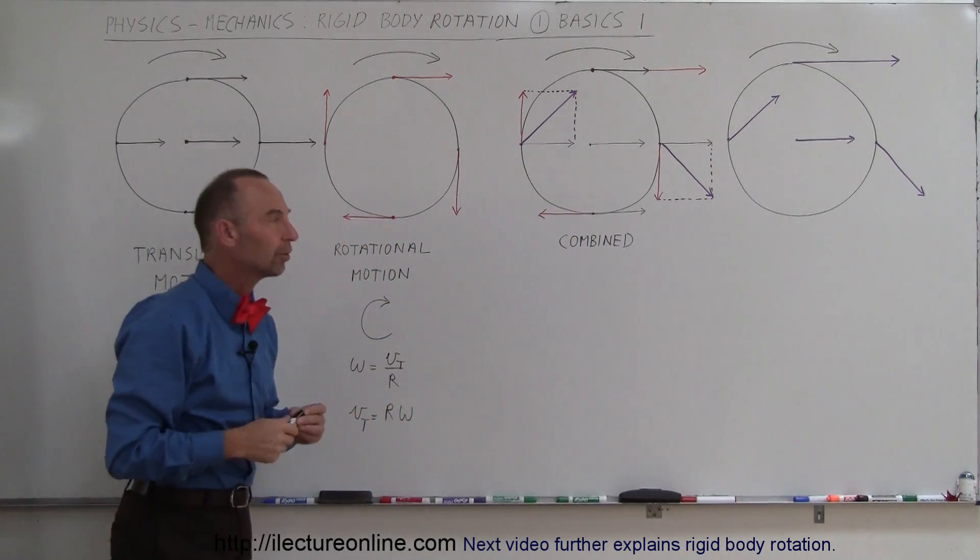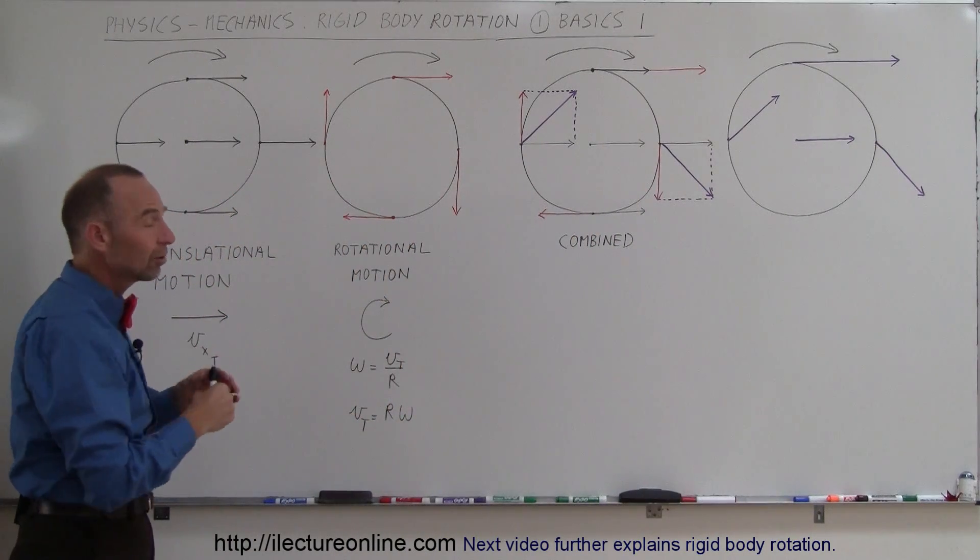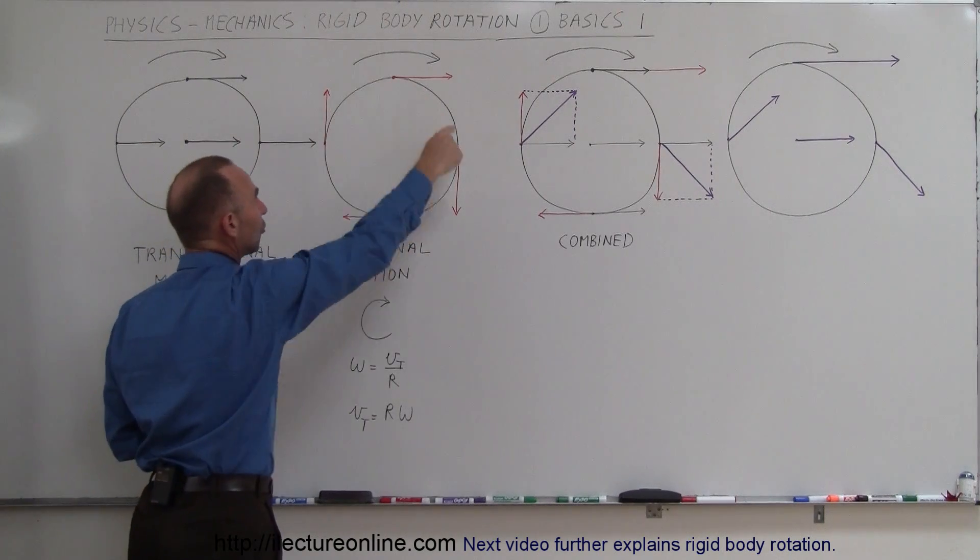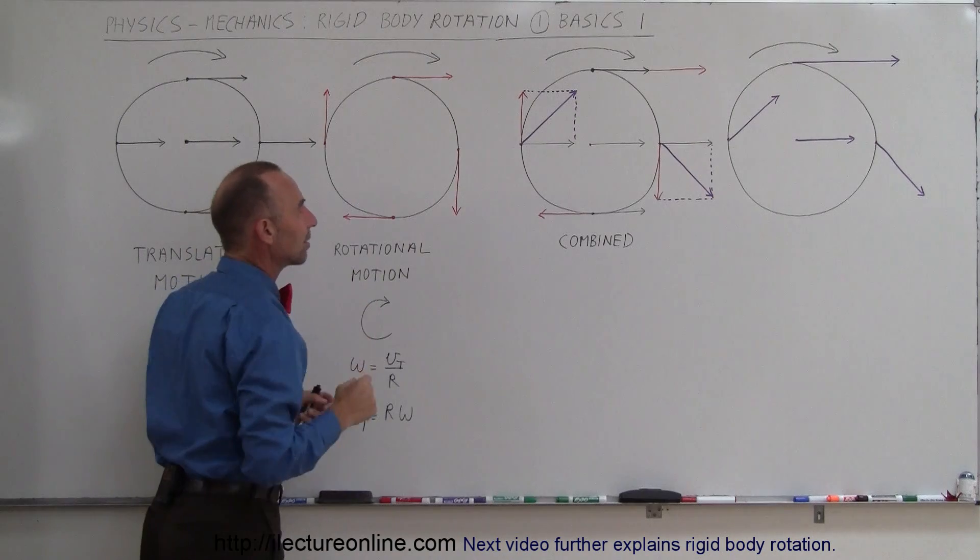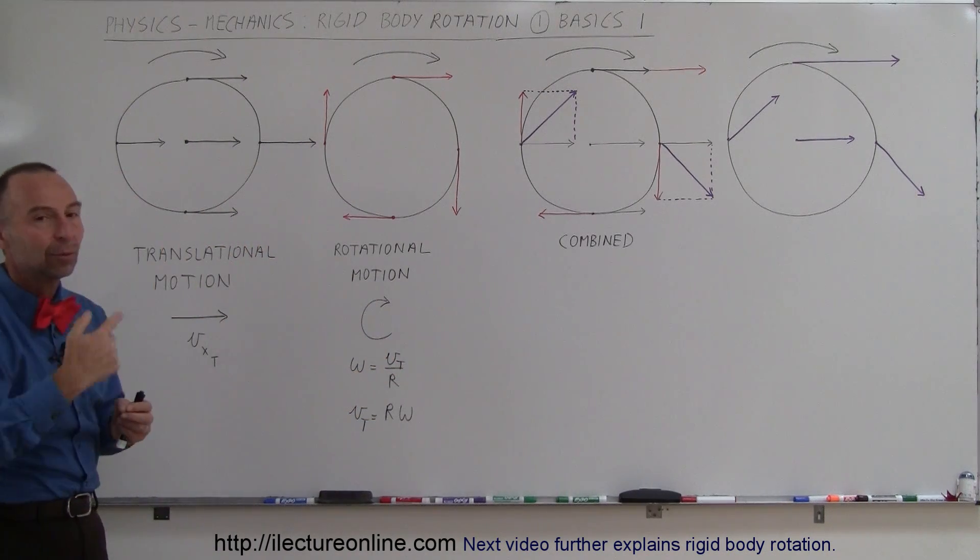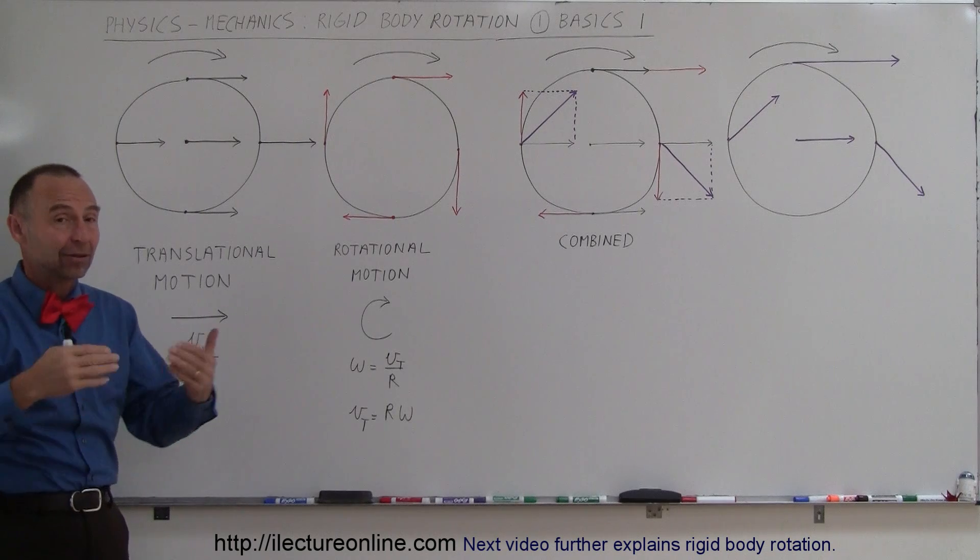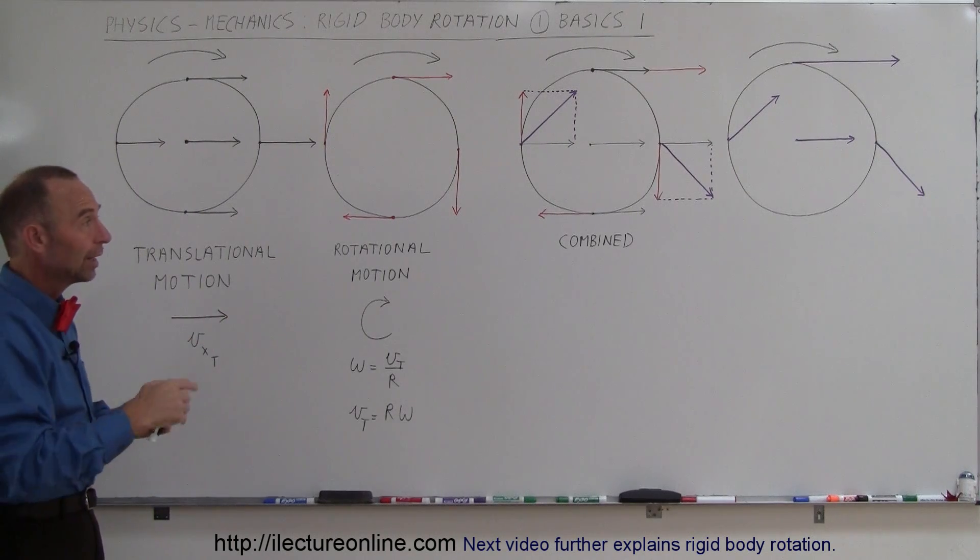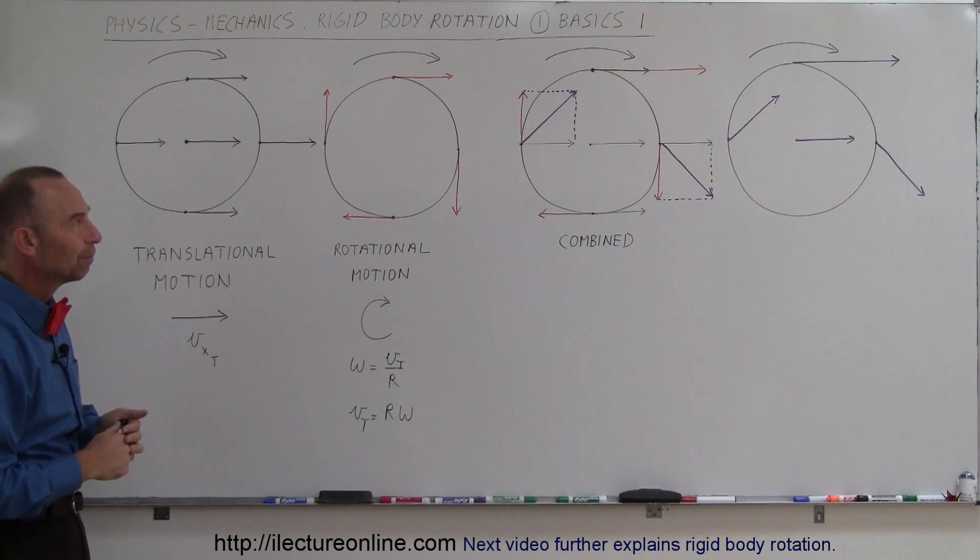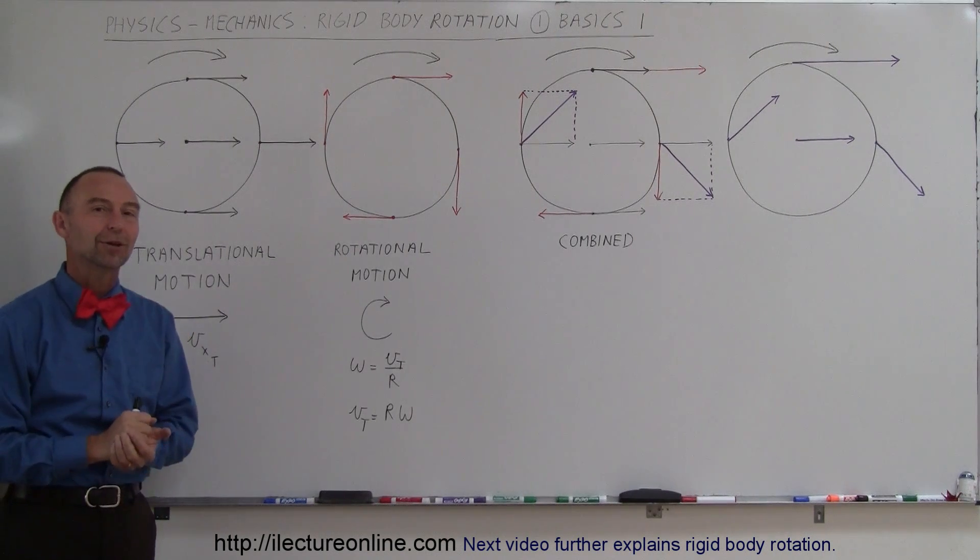So those are the basic principles. Just remember that it's always a combination of the translational motion vector and the rotational motion vector tangential to the edge of the tire. And that is what defines the motion of the tire as the tire rolls around. Now, it doesn't have to be a tire, it could simply be a cylinder rotating or a sphere rotating or something like that. It always has that same principle. So keep that in mind as we go through the next so many videos.